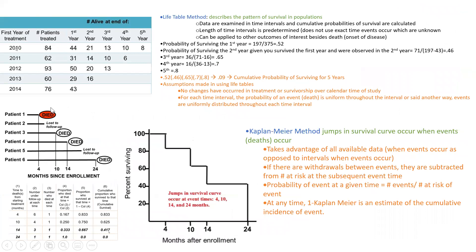The life table method determines patterns of survival in certain populations. Data is examined at time intervals, and even if you don't have complete data on people who just started treatment, you can still calculate the cumulative probability of surviving for one, two, three, four, or five years. One important assumption is that there haven't been major changes to treatment over the course of the study — for example, no life-saving drug entering the market partway through.